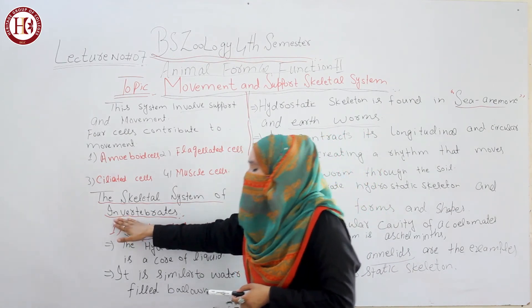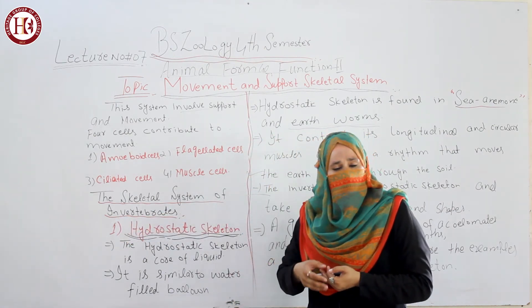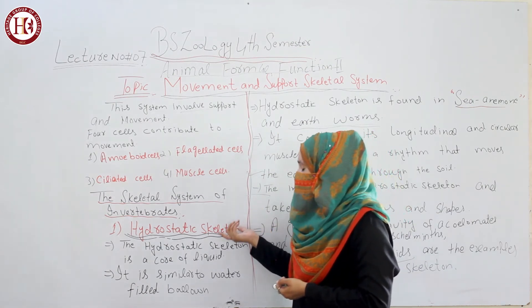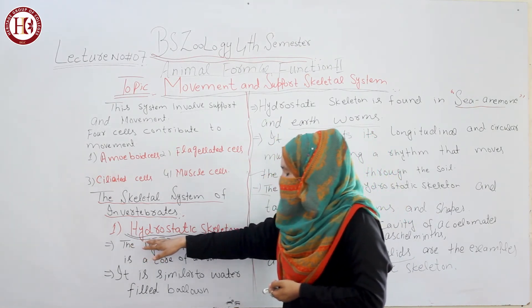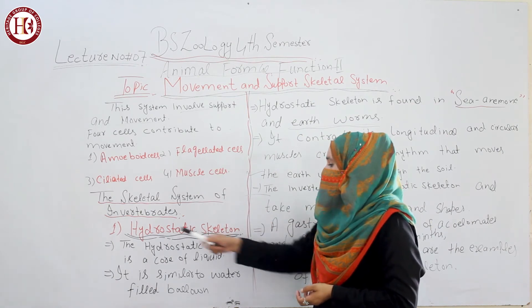Invertebrates are simple organisms. They have no vertebral column and no skeletal column. Their first type of skeletal system is the hydrostatic skeleton — 'hydro' meaning water — a skeleton containing liquid.